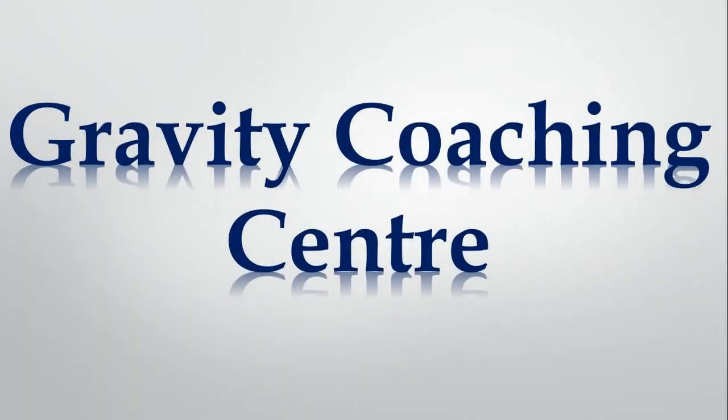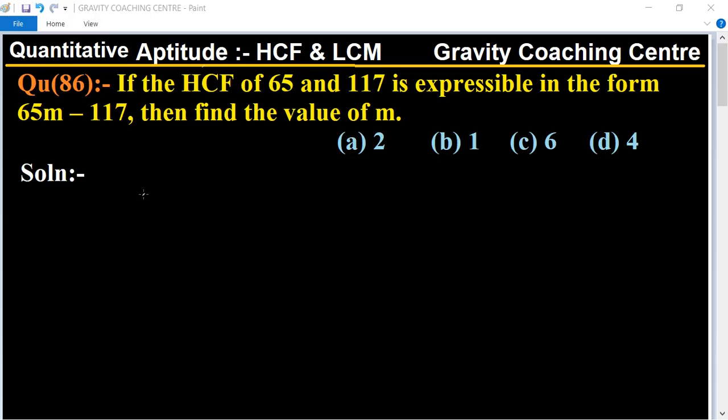Welcome to our channel, Gravity Coaching Center. Quantitative Aptitude chapter HCF and LCM, question number 86. If the HCF of 65 and 117 is expressible in the form 65m minus 117, then find the value of m.